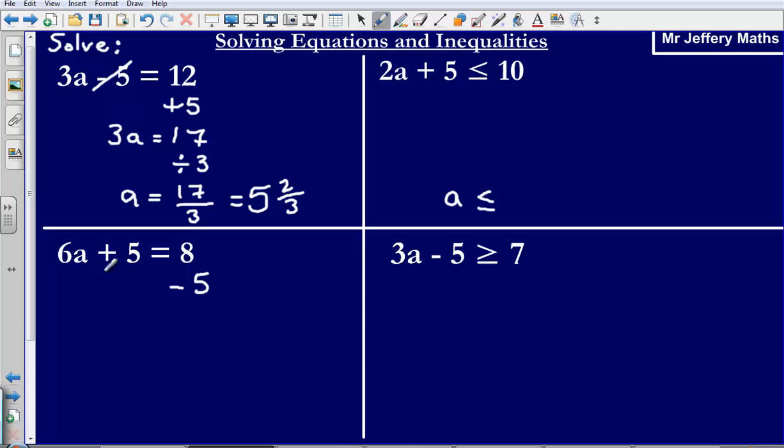By taking away 5, I'm getting rid of that plus 5 there and so what I'm left with is just 6A is equal to 8 minus 5 which is 3.